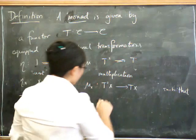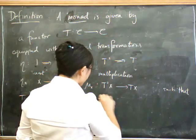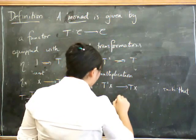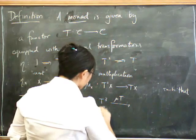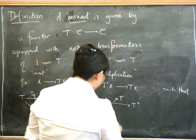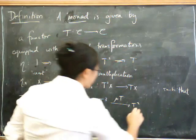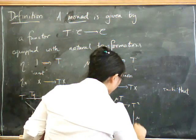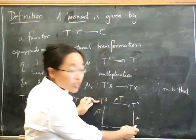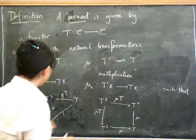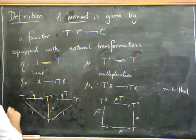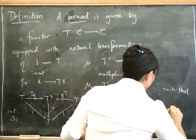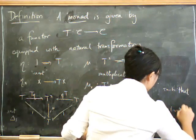And what about for mu, we have an associativity axiom that says, if you start with T cubed, there are two things you can do. You can either do mu on the left, or you can do mu on the right. And both of those take you down to T squared. And once you're at T squared, there's only one thing you can do, which is mu. So you do mu. And so this square starts at T cubed, gives you two ways of going down to T, and says that both of those have to be the same thing. So these are called the left and right unit triangles. And this is called the associativity square.